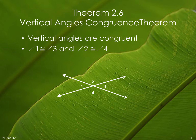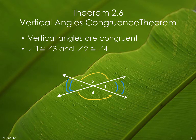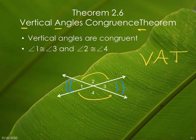The theorem tells us that vertical angles are congruent. So once you see a pair of vertical angles, angle 2 is congruent to angle 4, and angle 1 is congruent to angle 3. I like to abbreviate this as VAT — vertical angles theorem. When I put this in a proof, instead of writing out 'vertical angles congruence theorem,' I just write VAT. Know this one — vertical angles are congruent. We will use this one a lot.